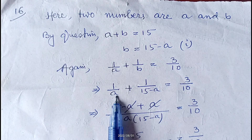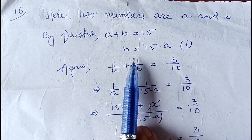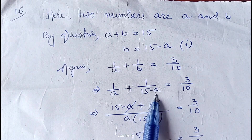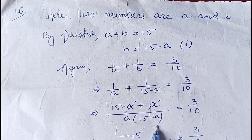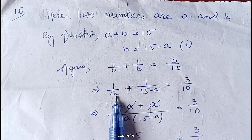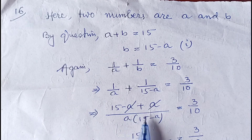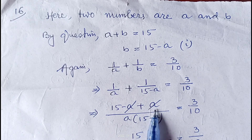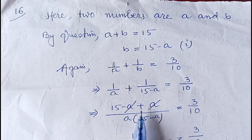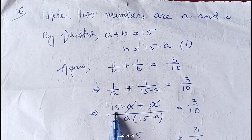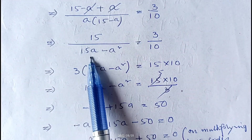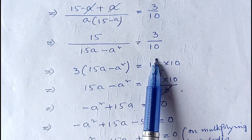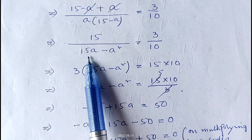Next, we can write 1/a plus 1/(15 minus a) equals to 3/10. If you take the LCM of a and (15 minus a), it will be a(15 minus a). This LCM divided by a gives (15 minus a), and divided by (15 minus a) gives a. So we get (15 minus a + a) over a(15 minus a) equals 3/10. The +a and −a cancel, leaving 15 over a(15 minus a) equals 3/10.